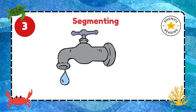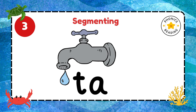Can you spell tap? Tap. You have to stretch the word and try to hear the sounds in it. What is the first sound? T. Quickly write it. A is the next sound. And what is the last sound? P. Tap. Very good.